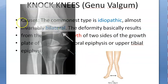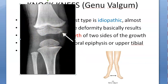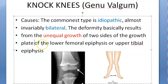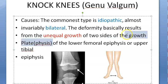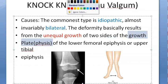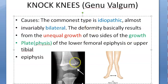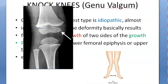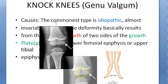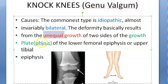Between the epiphysis you have the growth plate. The growth plate is nothing but the physis; above that you have the epiphysis. So there are two growth plates here — one growth plate near the lower femoral epiphysis and one near the upper tibial epiphysis. The problem is unequal growth of the two sides of these growth plates of the lower femoral epiphysis and upper tibial epiphysis.